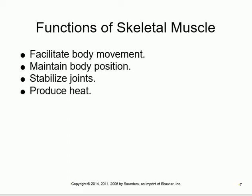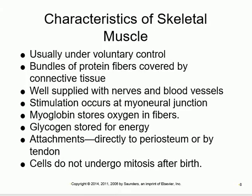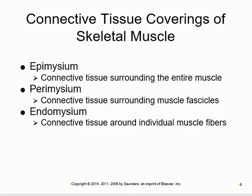Skeletal muscles are voluntary muscles attached to the skeleton that help you move, maintain position, and stabilize the body. These muscles attach to the periosteum either directly or through a tendon. The tendon is a fibrous connective tissue attaching muscle to bone. If it looks like a cord, it's called a tendon; if it looks like a flat sheet, it's called an aponeurosis.